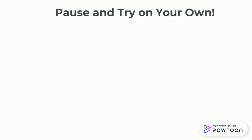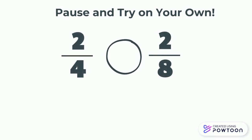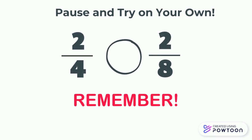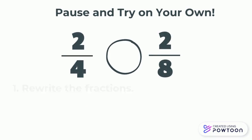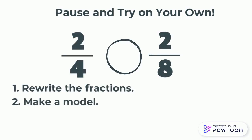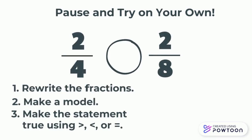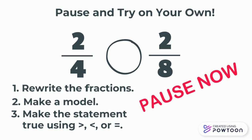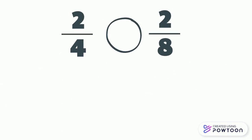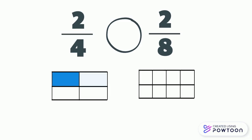Now get ready to pause and try this one on your own. Remember to first rewrite the fractions, then make a model, and finally make the statement true using a greater than, less than, or equals to symbol. Hopefully your model looked something like this. We can read this statement as: two-fourths is greater than two-eighths.